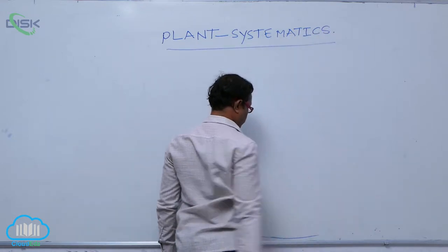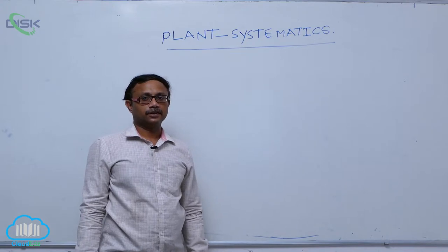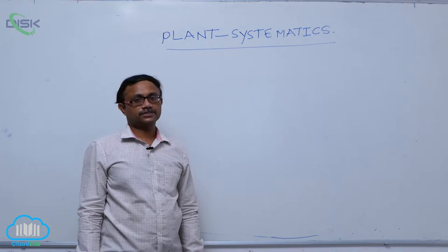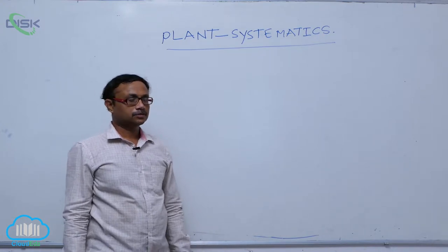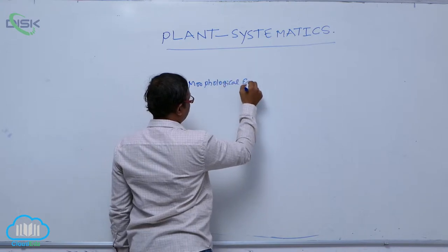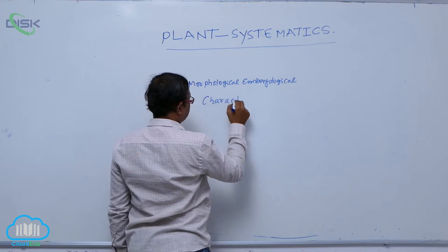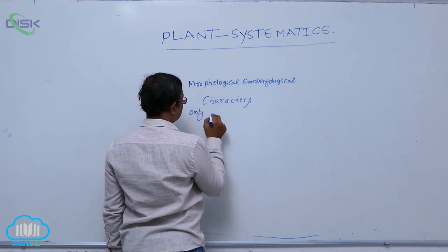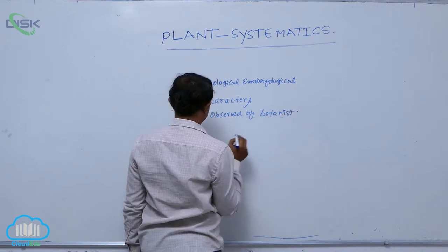Generally, we observe different types of plants in different regions — forests, gardens. Botanists identify these plants using morphological and embryological characters, which are observed by botanists.